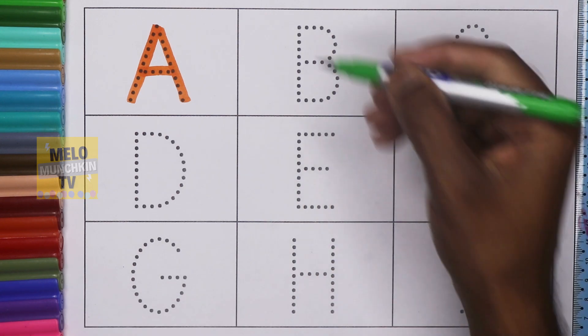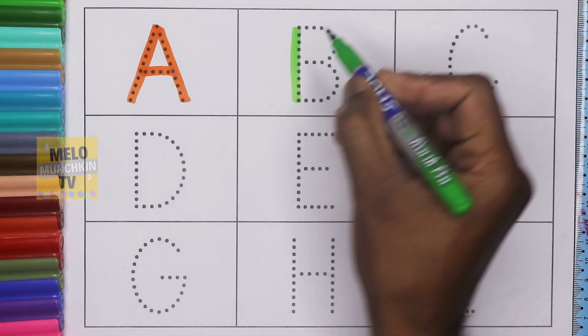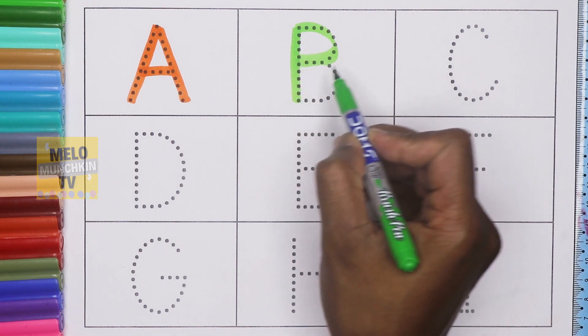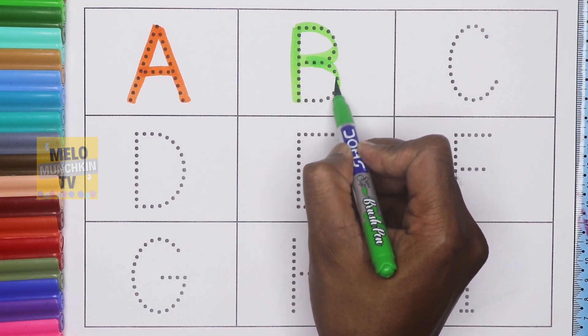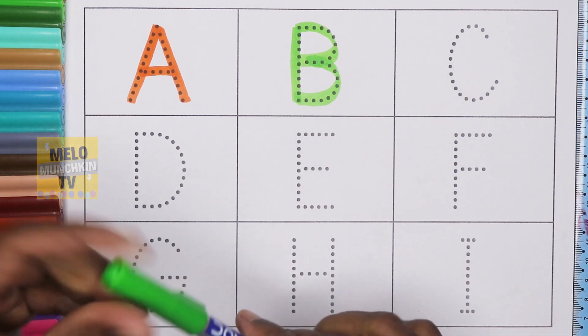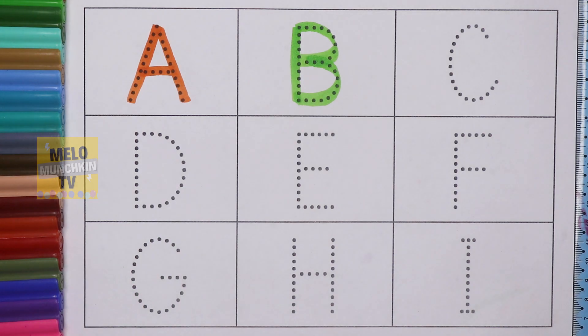Next I'll take green color to write letter B. B for ball. This is light green color.